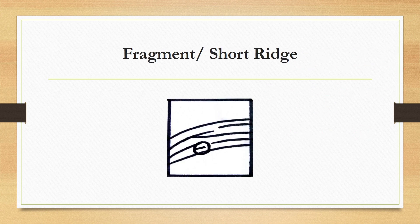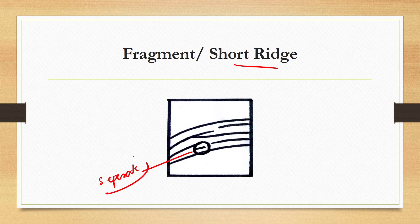Next is fragment or short ridge — an independent ridge of relatively small length. It is a separate, isolated ridge that is short compared to the surrounding ridges.